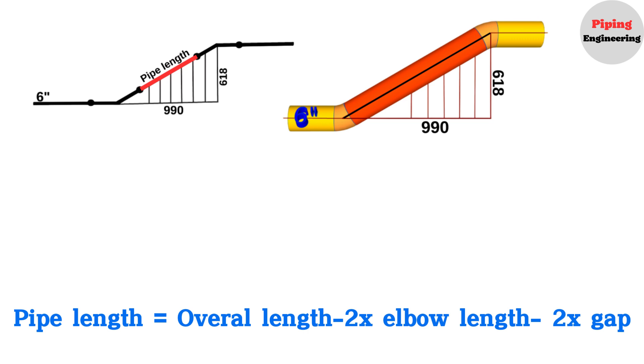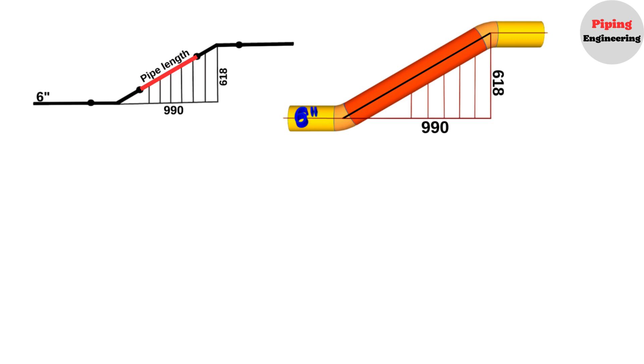To find the overall length of this pipeline, we will use the Pythagorean theorem. Let's mark the overall length and the center-to-center distance of elbows with L. So, the square of the overall length, L, will be equal to the square of 990 plus the square of 618.